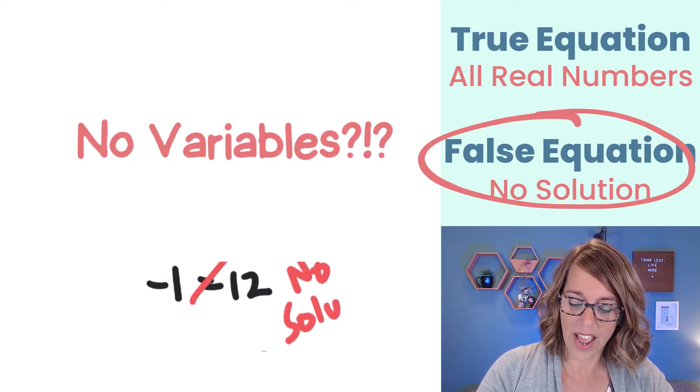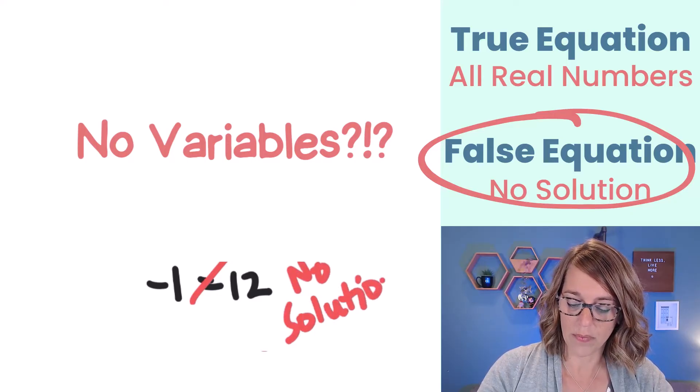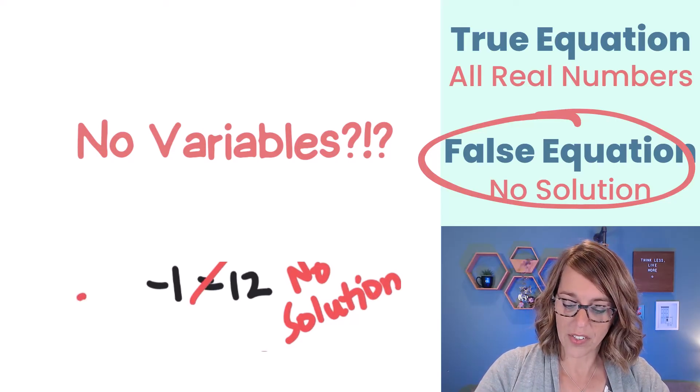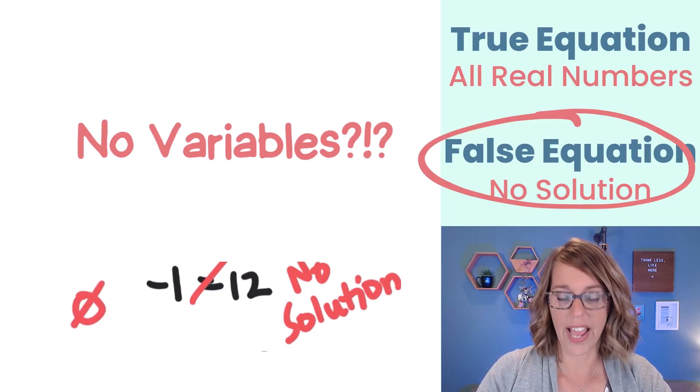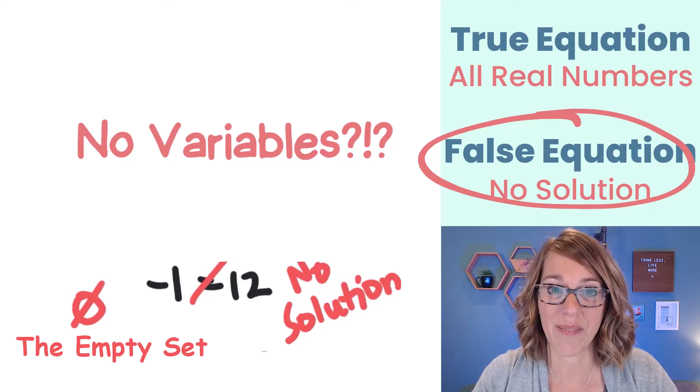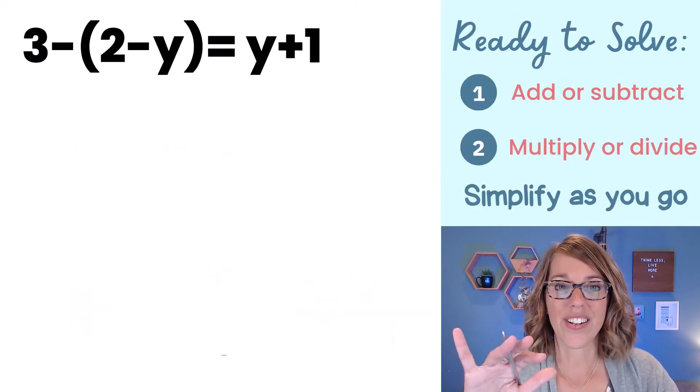So we can either write out no solution, or we can write that answer out as a circle with a line through it, which means the empty set. Okay, here's our next one.